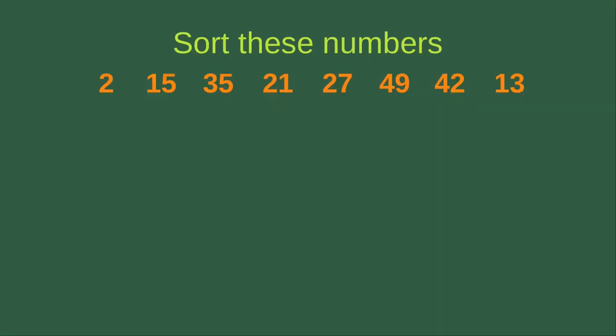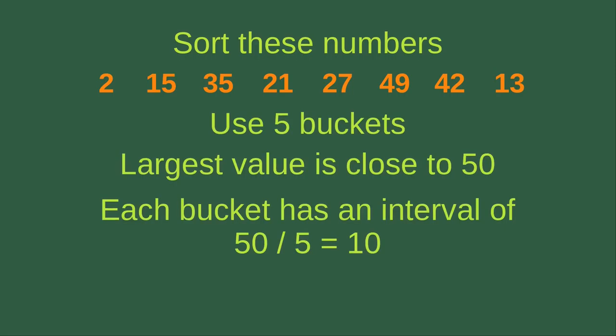Let us see an example. Suppose we want to sort these numbers — we have 8 numbers here. Suppose we want to do the bucket sort with 5 buckets. We have to think about the interval for each bucket. We can see that the largest value is close to 50, so we can use an interval of 10, which is 50 divided by 5.